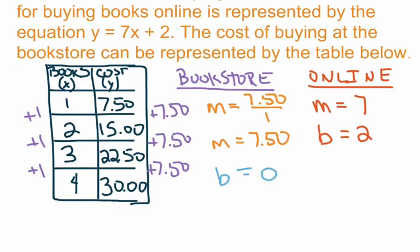For the bookstore the initial value is 0, meaning you don't have to pay any membership fee or shipping costs when buying books there. So the bookstore charges $7.50 per book with no subscription fee, while buying online costs $7 per book plus a $2 subscription fee. The question again is which is a better value — and it depends on how many books you're buying.